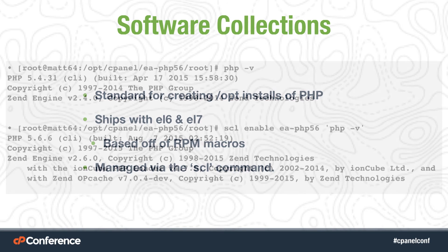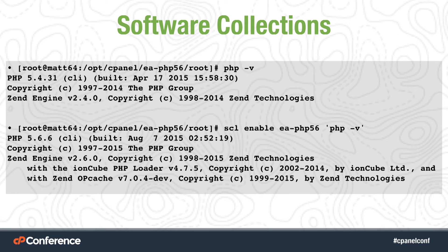Software Collections are managed via the SCL command. At the top of this example, we've run php -v — just running /usr/bin/php like you would on any other system, which in this case is PHP 5.4. On the second command, we run scl enable EA-PHP56 along with the same command, and you can see it's now running PHP 5.6. This works by editing the PATH environment variable to put the directory where PHP 5.6 is stored at the front. This means that if you want to call an SCL installation via a full path rather than a relative path, it should work fine without the SCL utility.